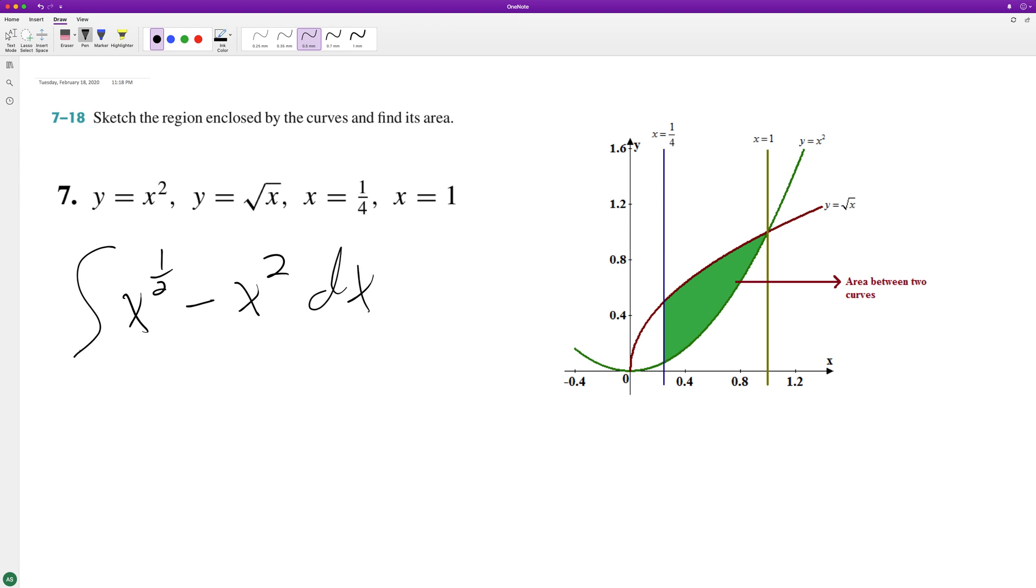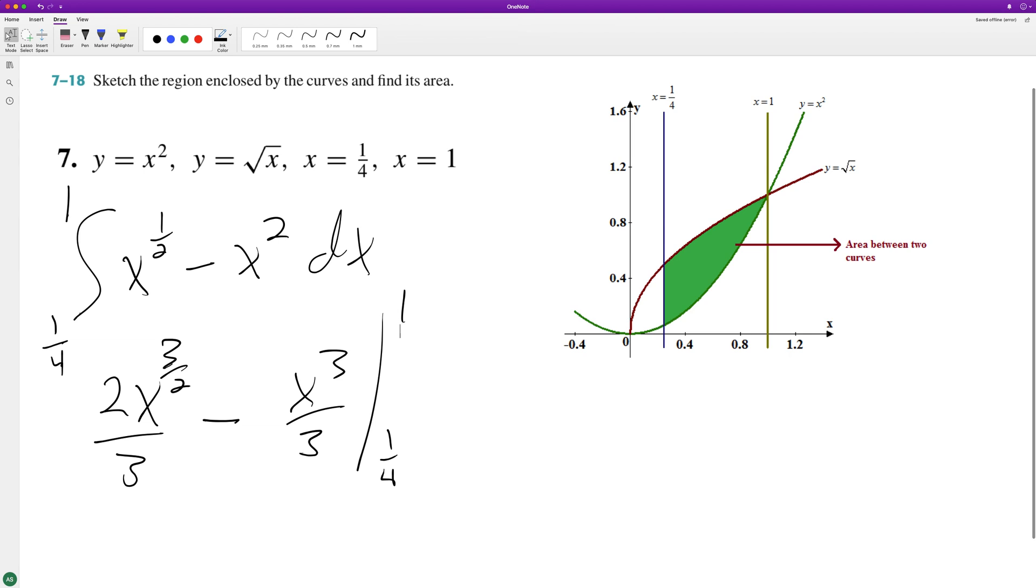Integrating this we get x raised to the 3/2 divided by 3/2, which is 2/3, minus x cubed over 3. And we're ready to evaluate this from 1/4 to 1.